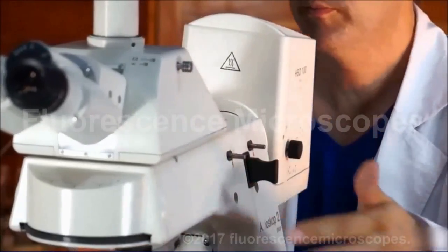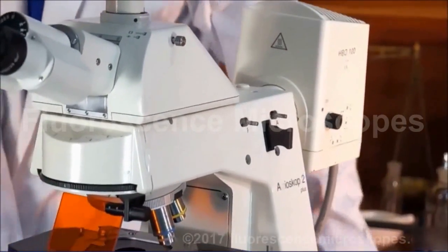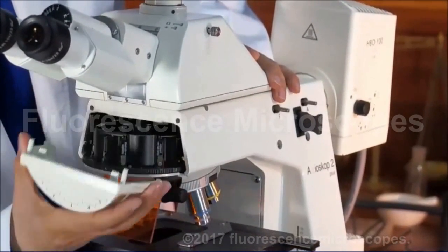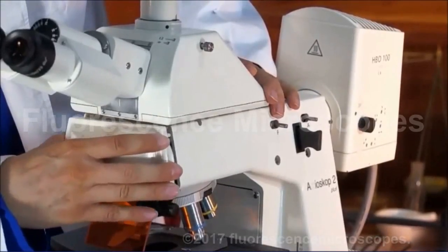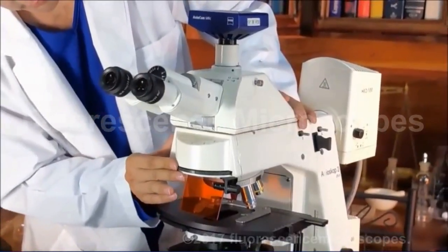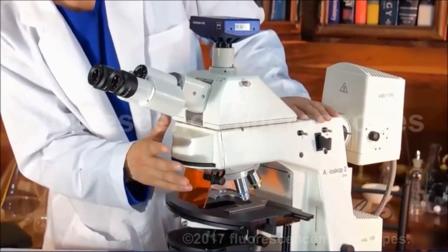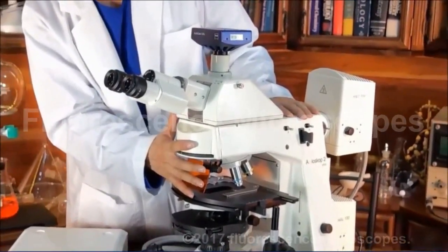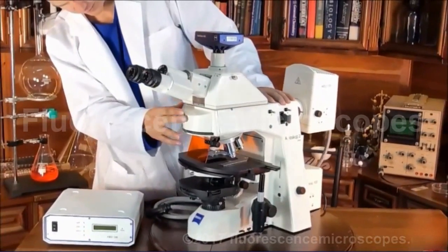And you have your filter cubes. We can put on whatever filter cubes you may want. Just let us know what your needs are. To access them you just take off this cover. This is how you rotate them. You have a total of five cubes that can be held in this microscope. Some of these microscopes only hold four. This particular one does hold five.